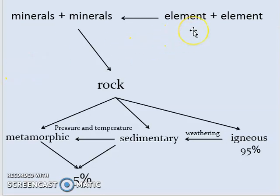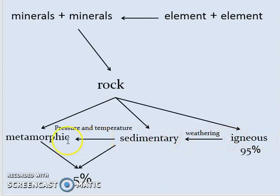It is important to differentiate between element and mineral. Similar atoms bonded together form an element. Different elements combined make a mineral. Mineral plus another different mineral produces rock. We have three types of rock: igneous rock, which makes up 90% of old rocks, and sedimentary and metamorphic rocks, which form 5% of the earth's crust.